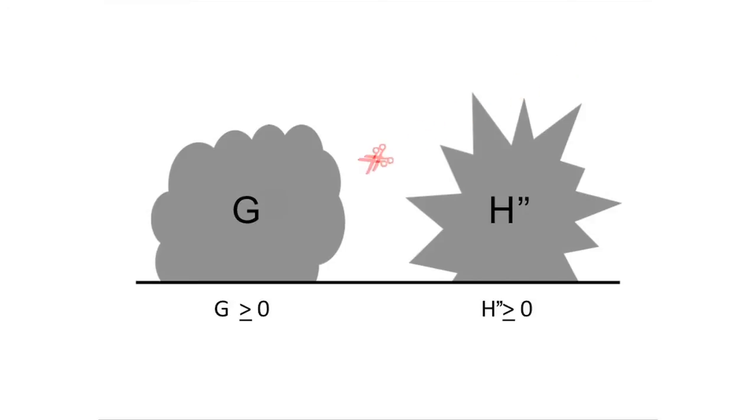Similarly, if red changes G to G prime, then blue can respond there, changing G prime back to some game G double prime, which is again greater than or equal to zero.